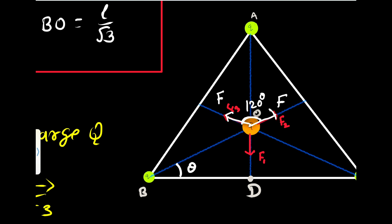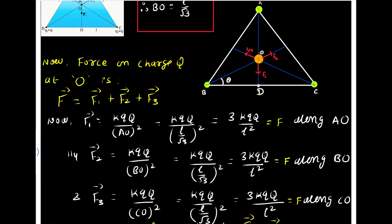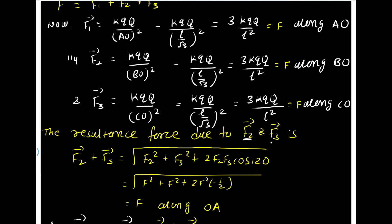Now how I know this is 120? See, this is 30. This is 30. So 30 plus 30 is 60. So the remaining angle is 120 degree. And this is the vertically opposite angle. If we draw like this, then if this is 120, then this is also 120. It is a vertically opposite angle. There are many ways to find out that angle. So the resultant of F2 and F3 is F2 square plus F3 square plus 2 F2 F3 cos 120. Now F2 and F3 are equal. So F square, F square plus 2 F square cos 120 is minus 1 by 2. So resultant is F.